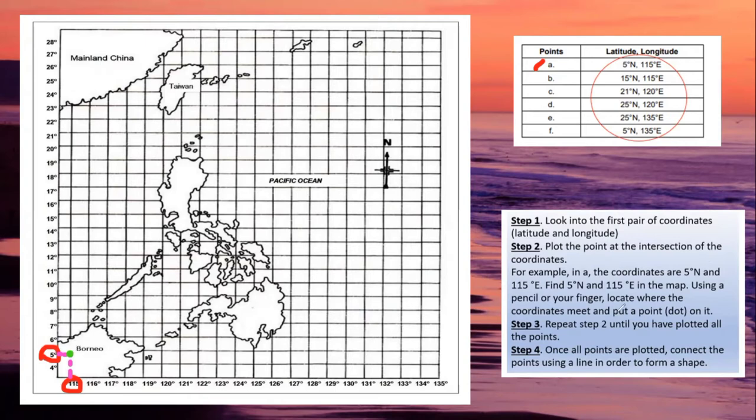Then afterwards, you proceed with the next set of points. So point B, 15 degrees north. So find it again, 15 degrees north. Here it is. Its partner is 115 degrees longitude or east. So this one at the bottom. So again, you will have to find their point of intersection. Let's see where these two points will intersect. So once again, 15 and 115.